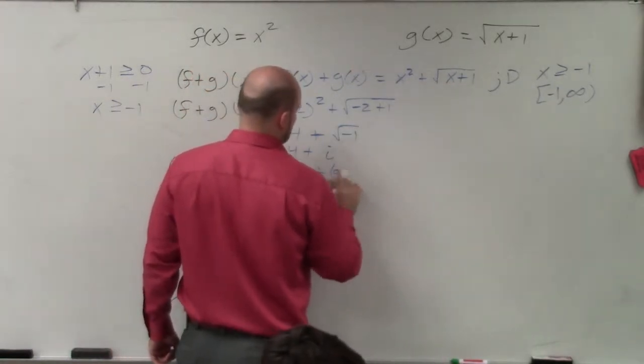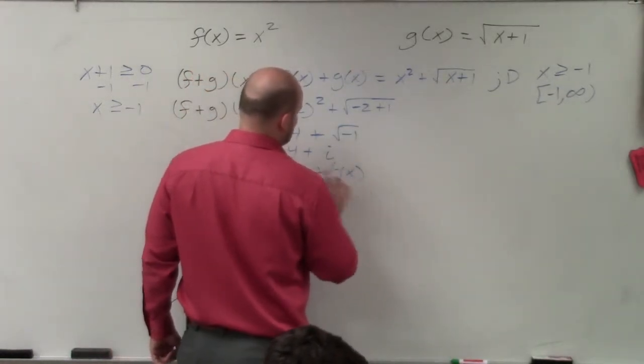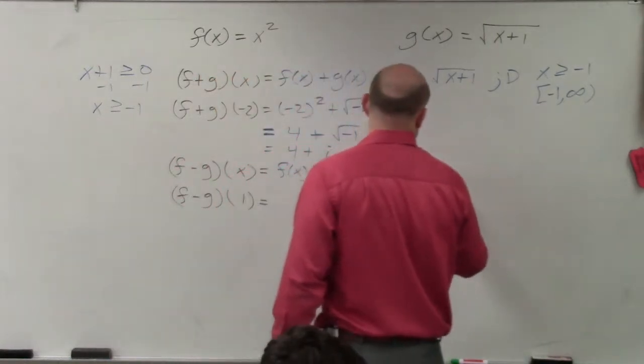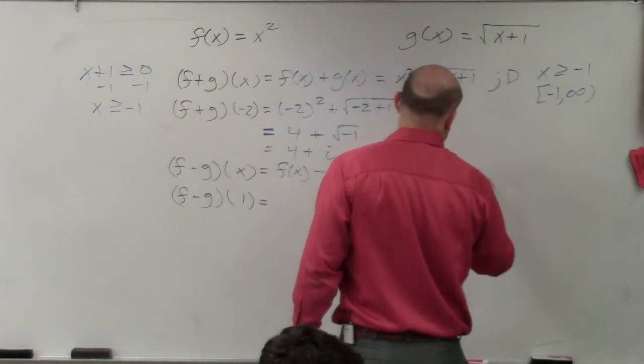f of x minus g of x. So in that case, it would be x squared minus square root of x plus 1.